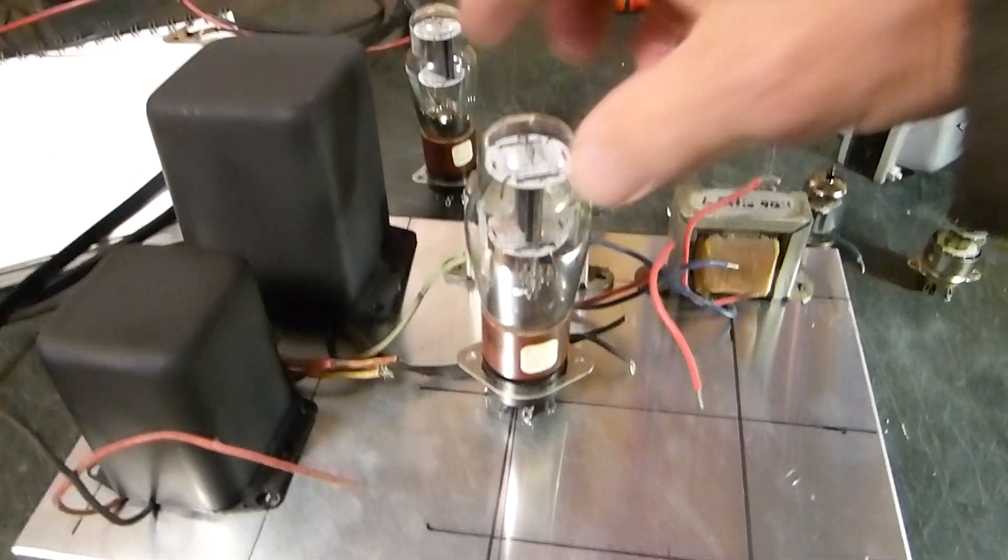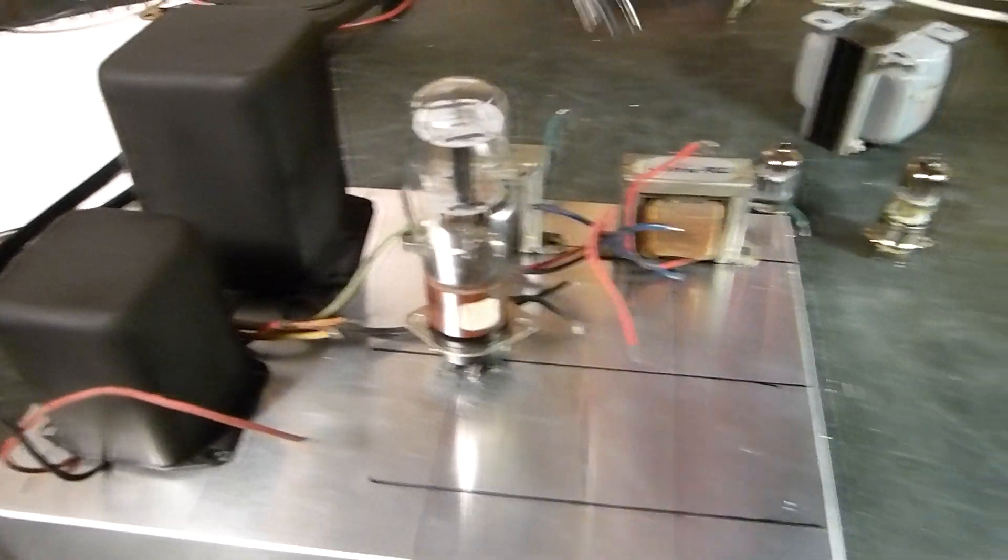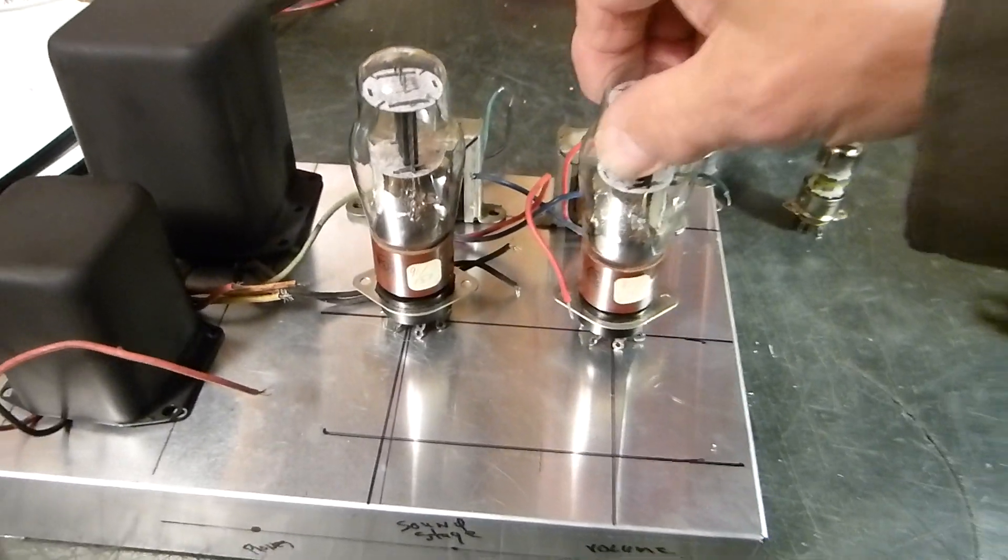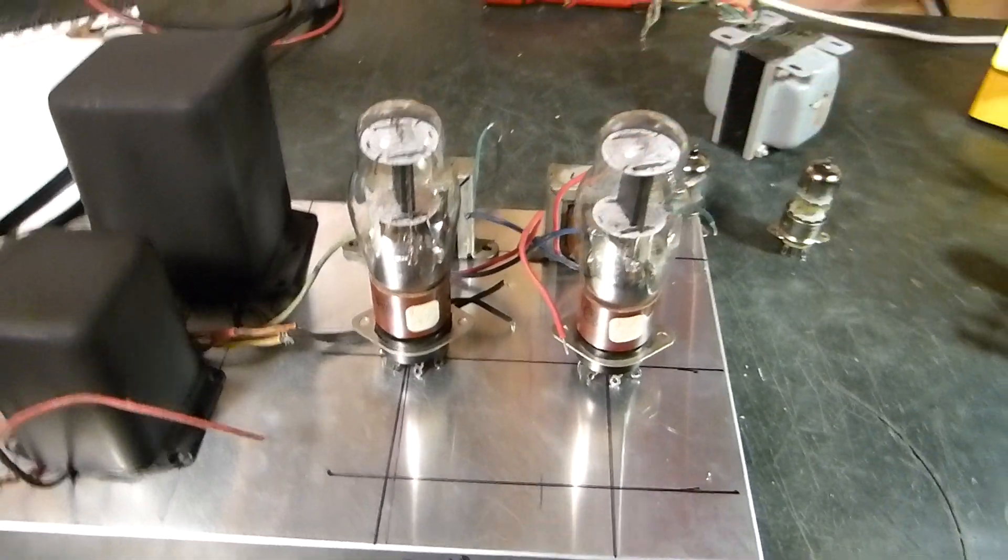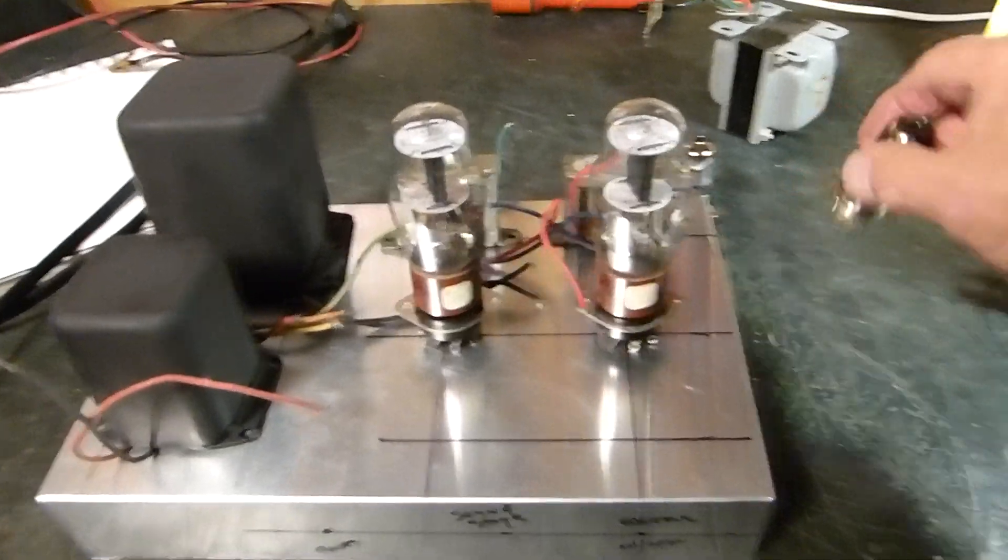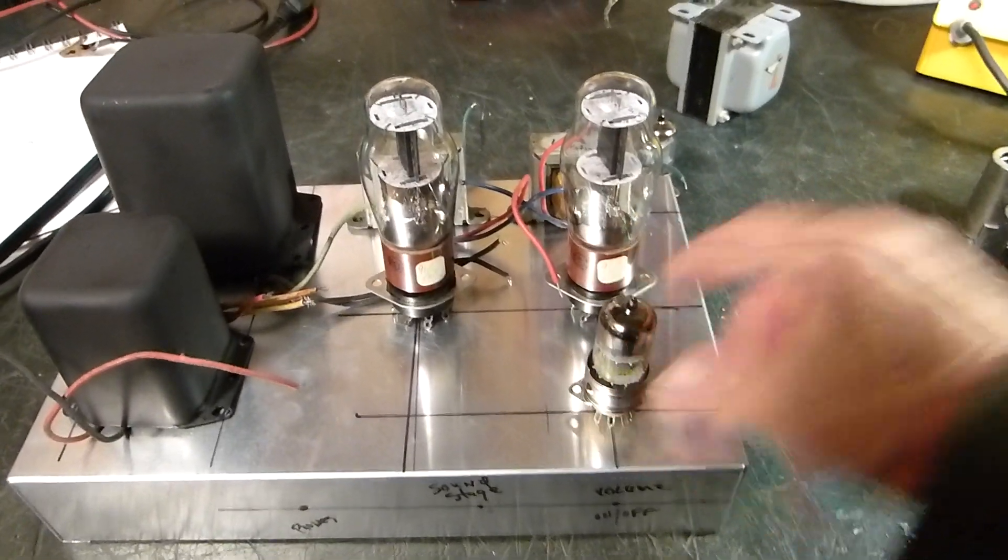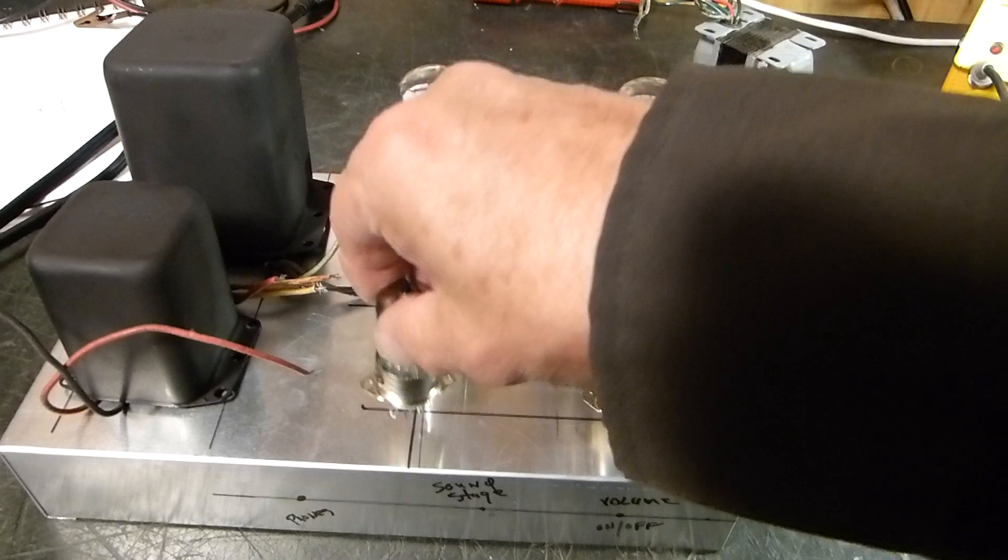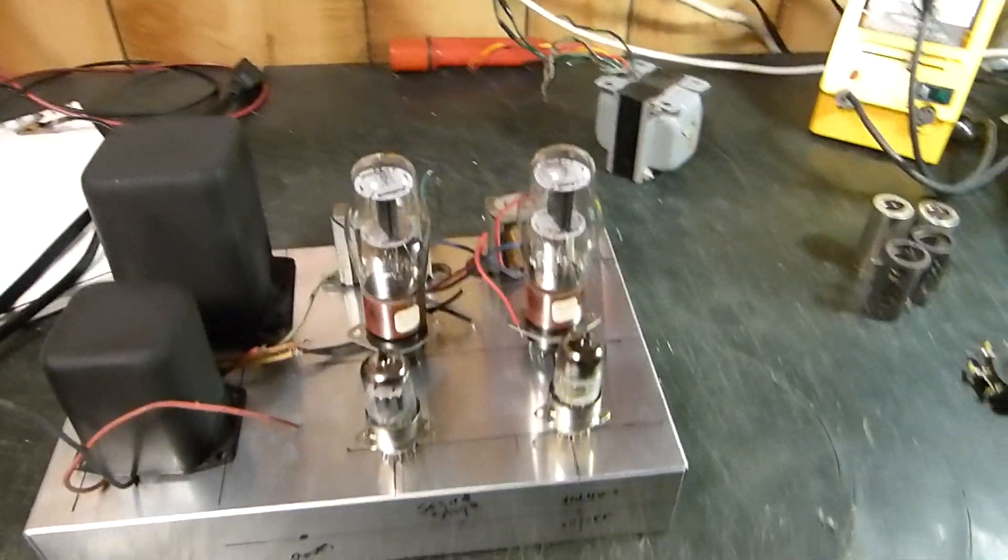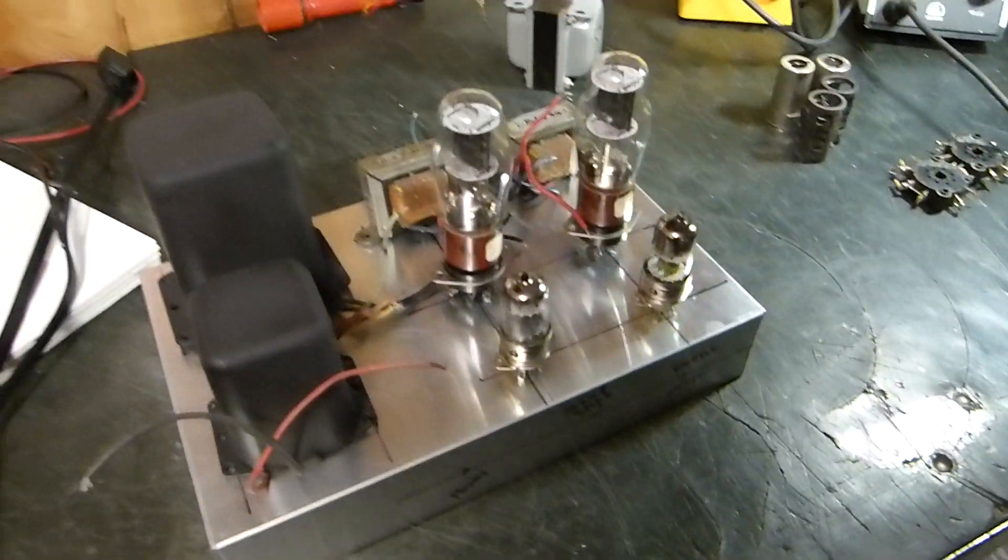And then I'm going to use a 1626. That's a pretty little transmitting tube from World War II era. I've got a bunch of those. And then I'm going to use 12AU7s to drive it. So that's basically what it's going to look like. These two guys right here are going to be underneath it.